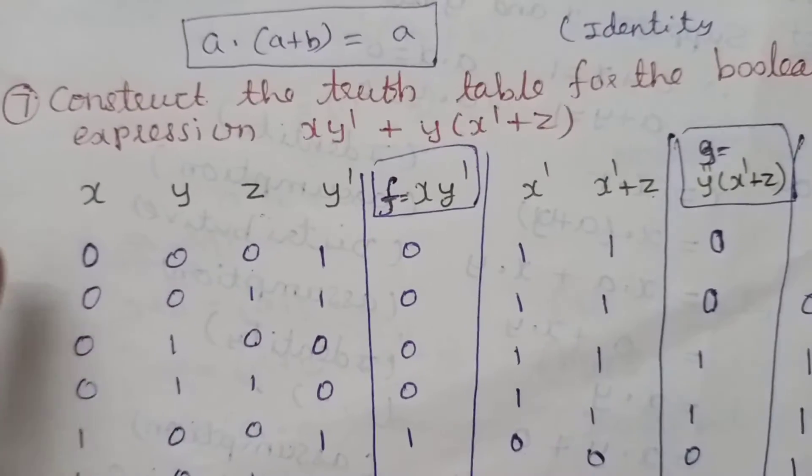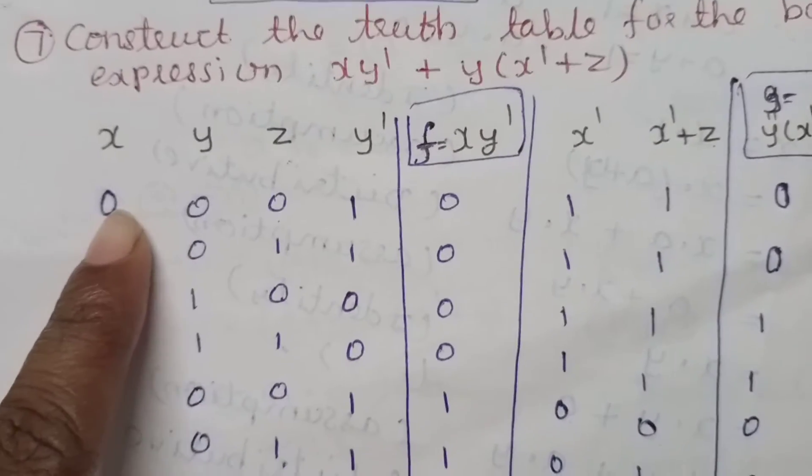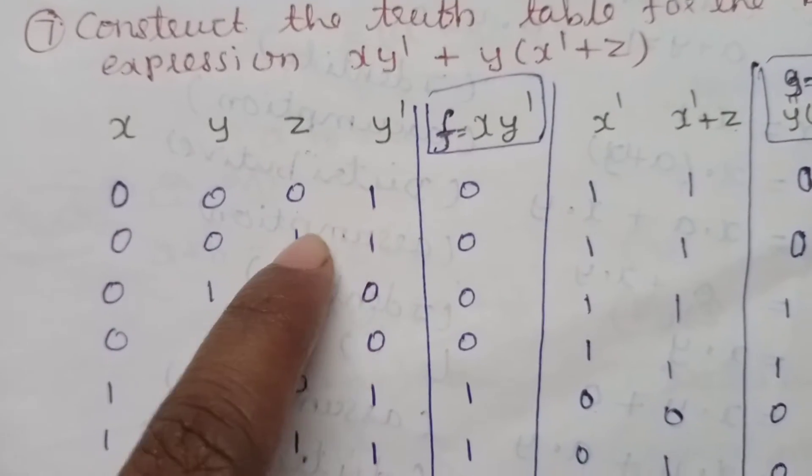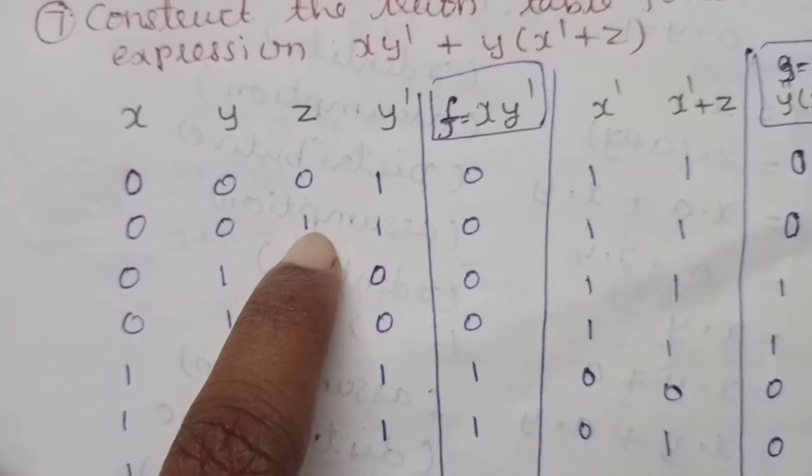Boolean algebra is 0, 1. So x, y, z is 3 variables. Change the value to z. What value to z is 1.